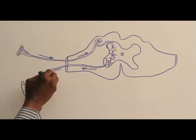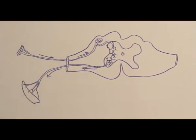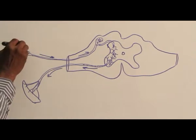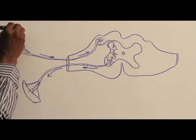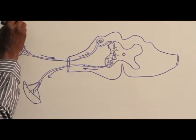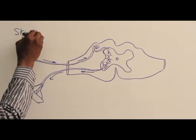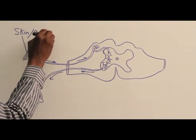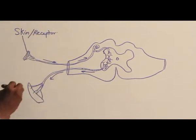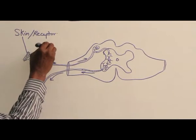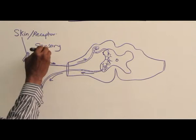The arrow is showing the direction of the impulse flow. This is the skin, what we call receptor.